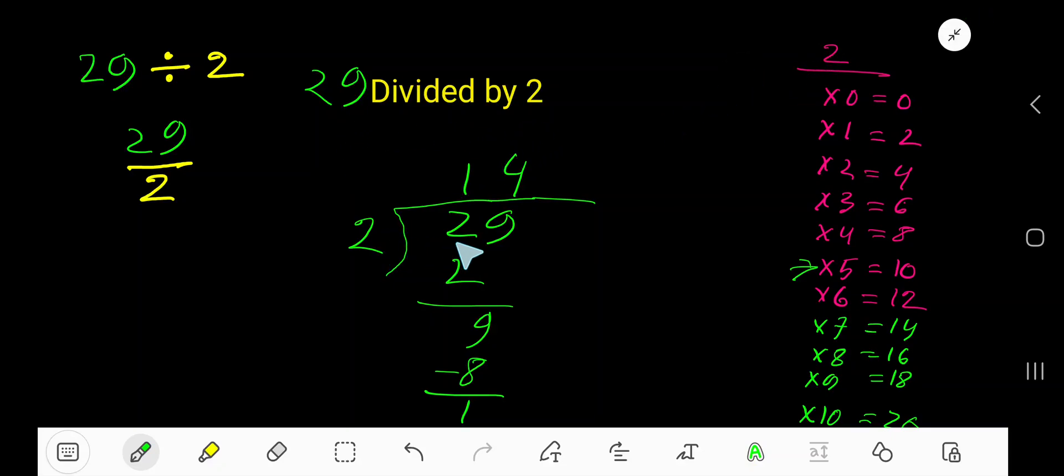29 divided by 2. 2 goes into this 2 how many times? 2 goes into 2, 1 time. Write 1. 1 times 2 is 2. Subtract. You are getting 0.